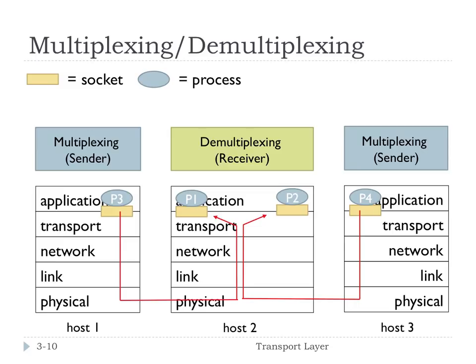In this scenario, we have three hosts represented. Processes are the blue circle or oval, and sockets are the yellow rectangle. Process three is sending a message to process one, and process four is sending a message to process two. Notice we have the internet protocol stack underneath here, representing that encapsulation.